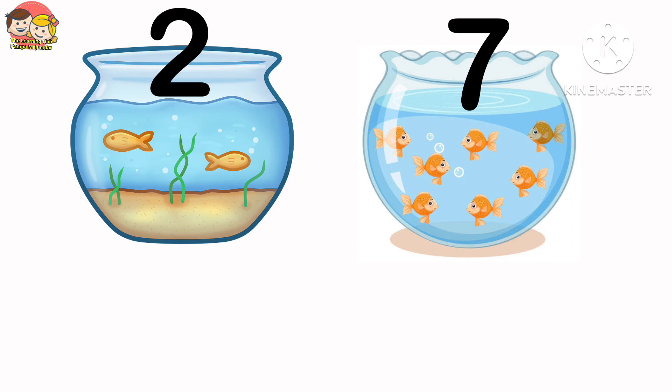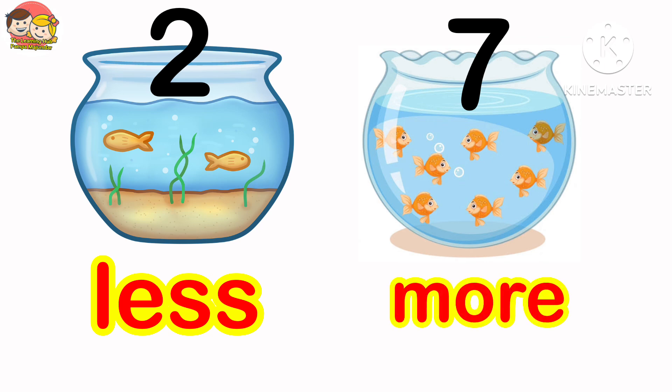So the right bowl has seven fish and left bowl has two fish. So the first bowl has less fish and second one has more number of fish.